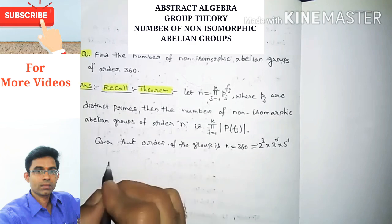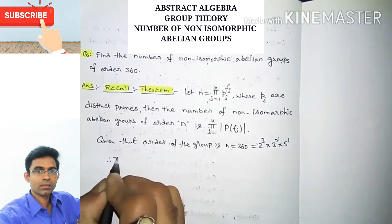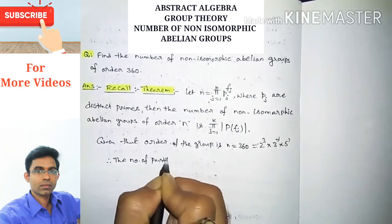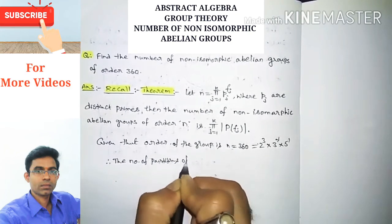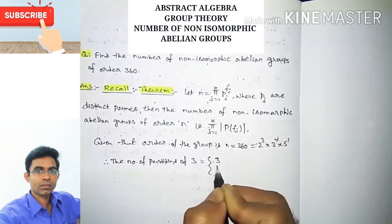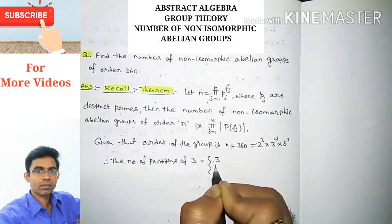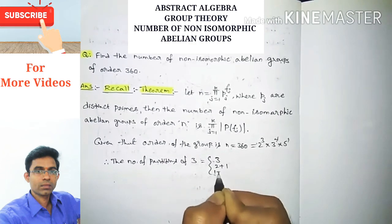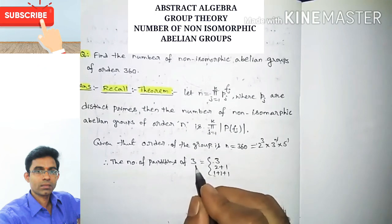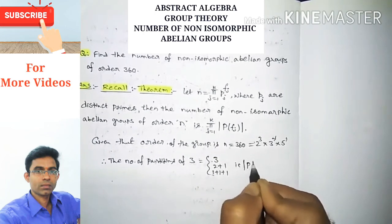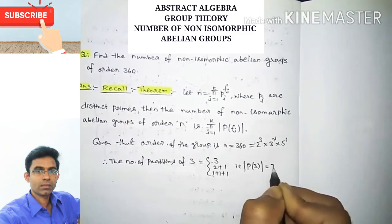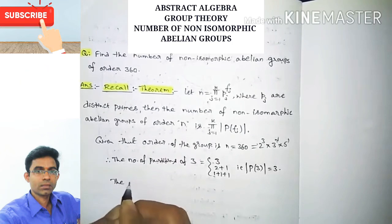The partitions of 3 are: 3 itself; 2 plus 1; and 1 plus 1 plus 1. These are all the partitions of 3, so the cardinality of partitions of 3, meaning the total number of partitions of 3, is equal to 3.